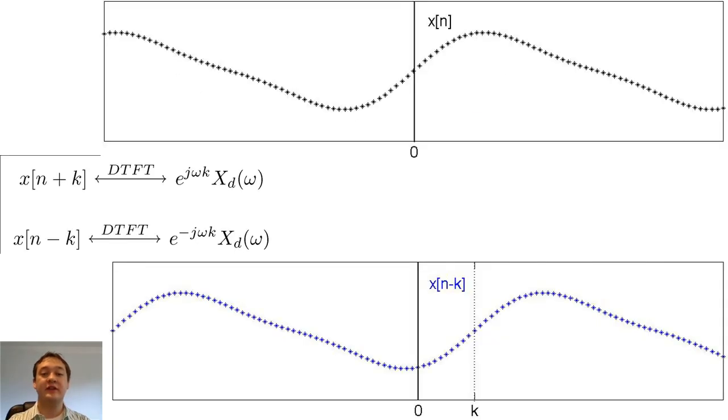If you multiply the DTFT by a constant phase factor, such as e to the j omega k, you will time shift the original signal, x of n, by that same factor of k samples. I want to make sure that you notice that shifting the signal in time does not affect the magnitude of the DTFT. Shifting affects only the phase.